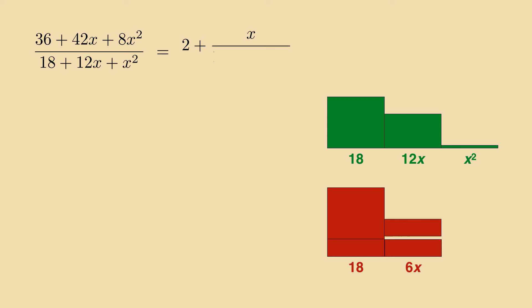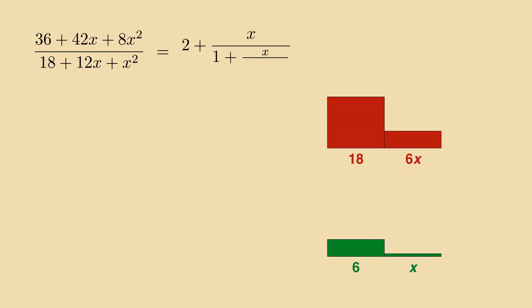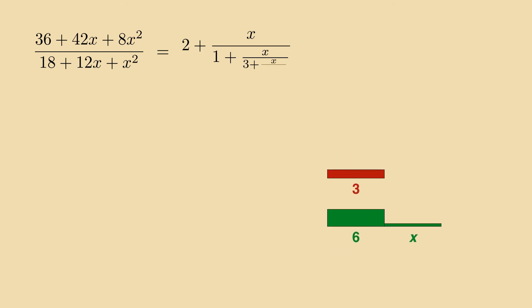Fit 18 plus 6x once into the other and be left with 6x plus x squared. Factor out x and invert. 6 plus x fits 3 times into 18 plus 6x with 3x left over. Factor out x and invert.